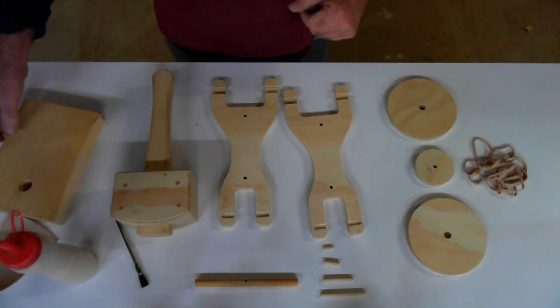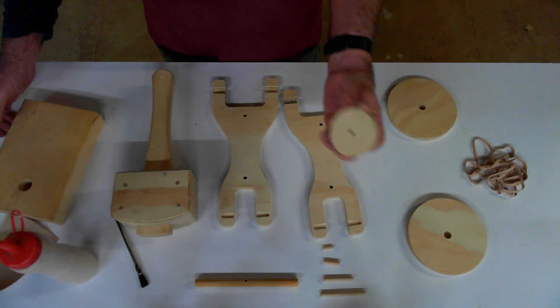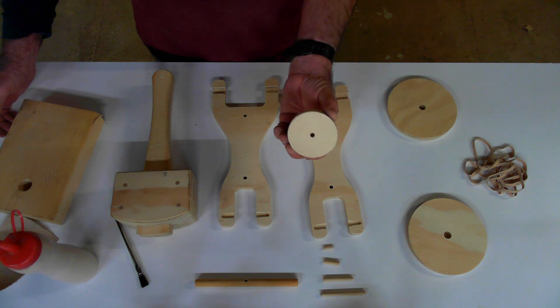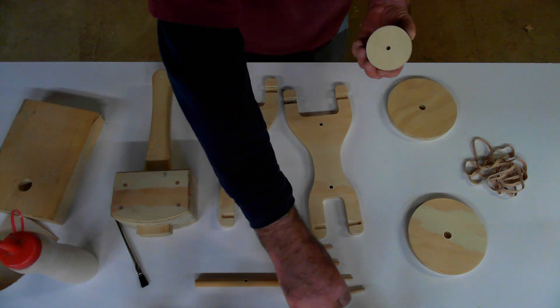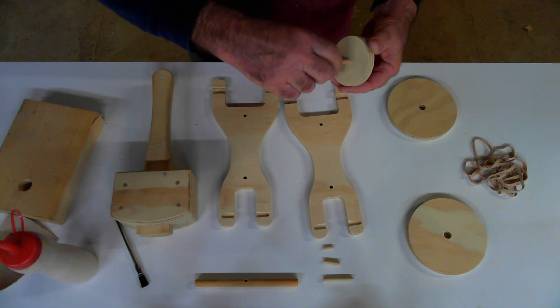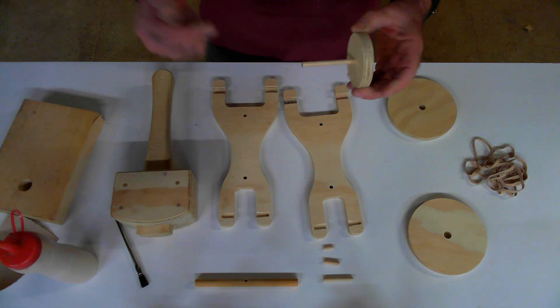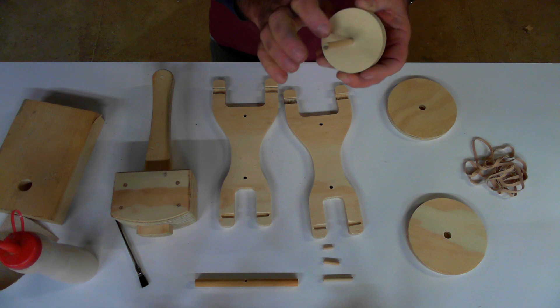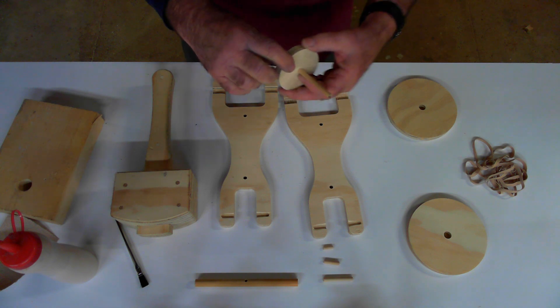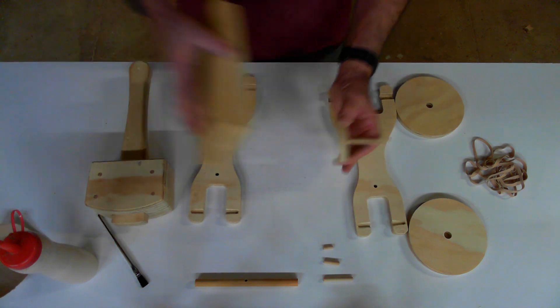So we're going to start by putting the front wheel assembly together. So you've got the smaller of the wheels and you want the three inch piece of quarter inch dowel. And start it in the hole. And you want to drive this through so it's equal amount on both sides. And that's where this kind of anvil comes in handy.